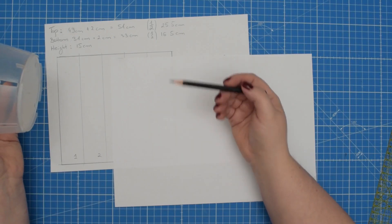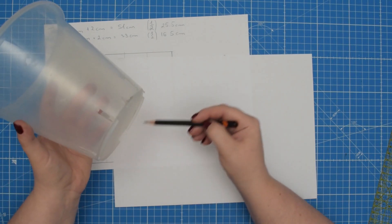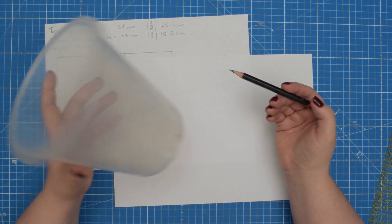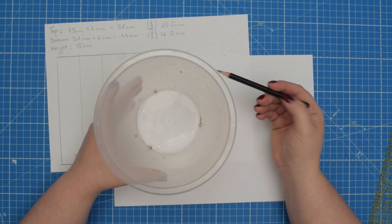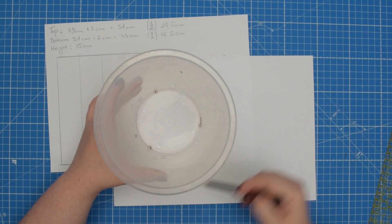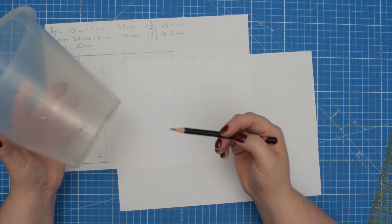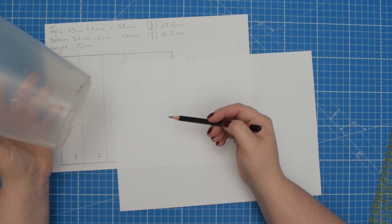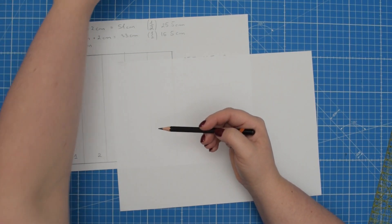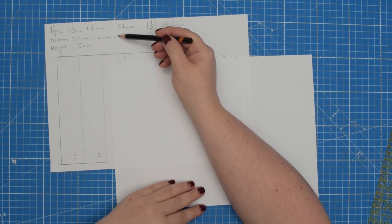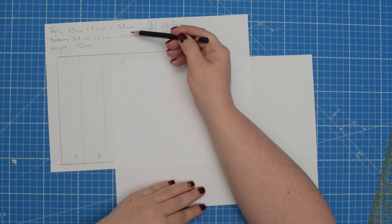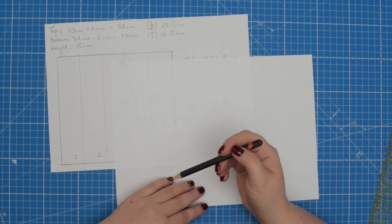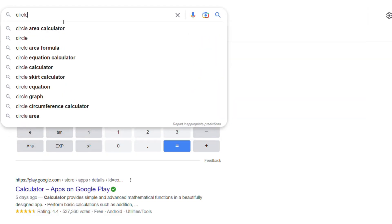Since we added some ease to the bottom circumference you cannot simply place your pot and draft the pattern. So we need to create a circle which is slightly larger.